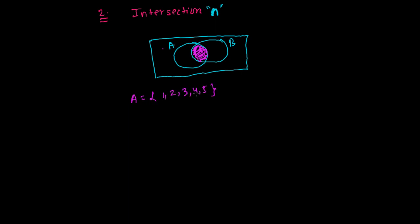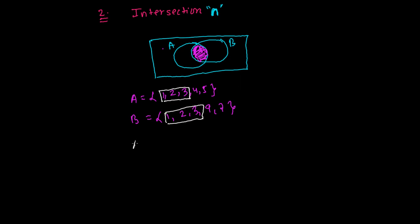For example, suppose set A is {1, 2, 3, 4, 5} and set B is {1, 2, 3, 9, 7}. The things common in both A and B are 1, 2, and 3 — they are here in A also and here in B also. So A intersection B gives us those common elements: {1, 2, 3}.